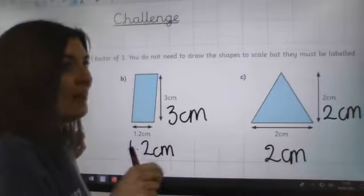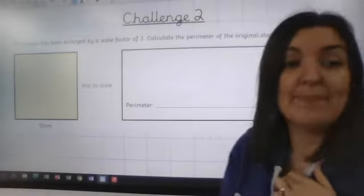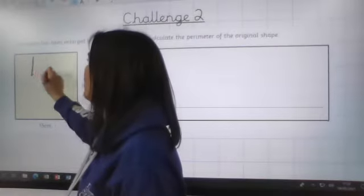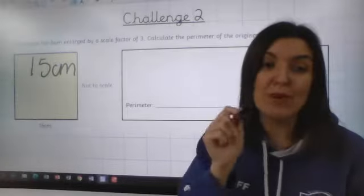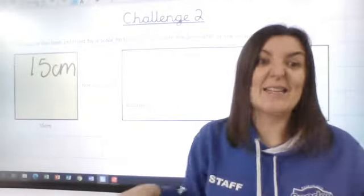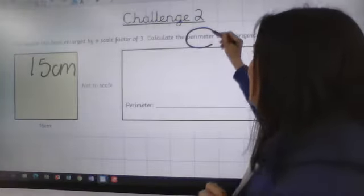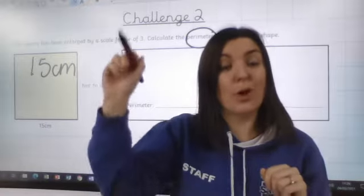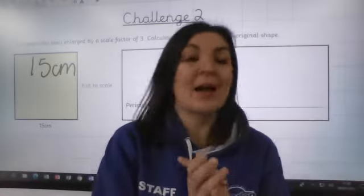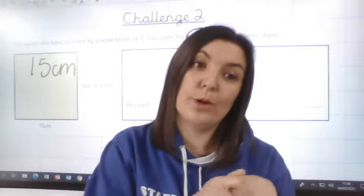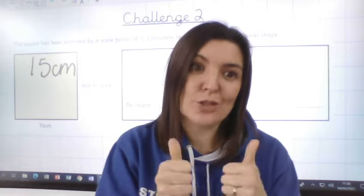Your final challenge for today is the second challenge. This square, with all sides 15 centimetres, has been enlarged by a scale factor of 3. Your first job is to work out what each side is now - remember they're all the same on a square. Then you've got to calculate the perimeter, remembering that's adding together all of the outside edges. I'm looking forward to seeing the work in your workbooks and all of your working out in your purple book. Well done for all this fantastic home learning!